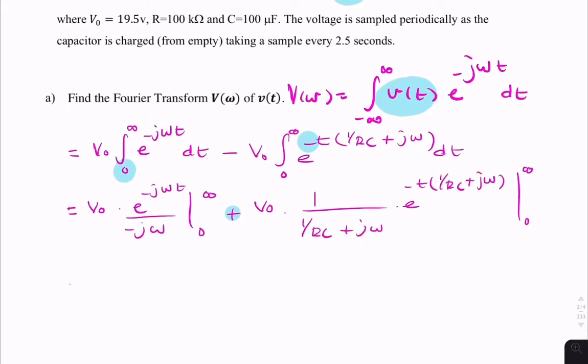That gives us V0 into 1 over RC minus V0 into 1 over j omega. Let's write it as V0 over j omega minus V0 over 1 over RC plus j omega.